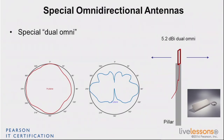But if you look at the E-plane, you can clearly see that it's directional on one side and directional on the other side. So it's not a real omni per se — it's just two directionals stuck together to create this dual omni effect. Not an antenna you'll find very often in offices, but in large warehouses and shopping malls, it's something you'll find quite often.